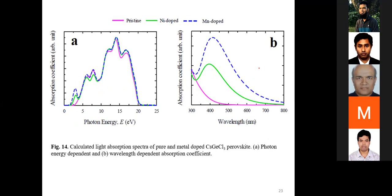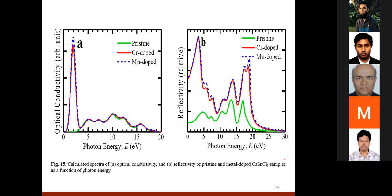The absorption coefficient for pure and doped cesium germanium chloride is presented. For the doped samples, there is absorption in the visible region. Expanding the visible region confirms no absorption for the pure sample, but doping introduces absorption in the visible range. Optical conductivity also increases in the visible region as a result of doping.